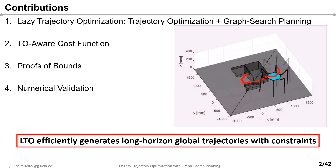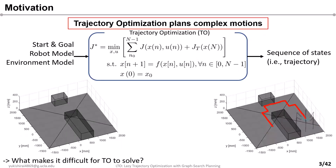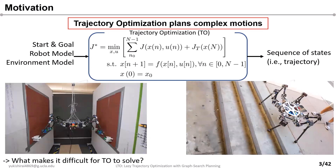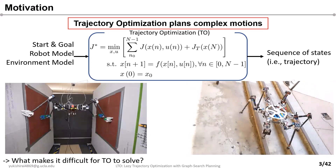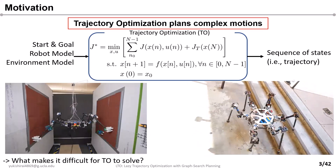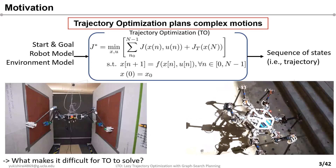Now we are going to describe the motivation of this work. In order to realize complex motion, trajectory optimization can be used. Given constraints, it can design an optimal trajectory while satisfying complex constraints such as dynamics or start and goal constraints. Using trajectory optimization, you can even design dynamic trajectories such as climbing and walking. Then, what makes it difficult for TO, trajectory optimization, to scale?